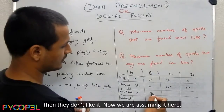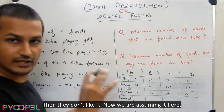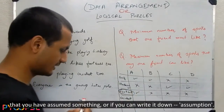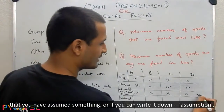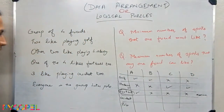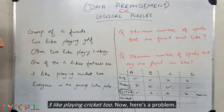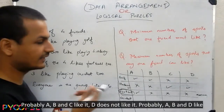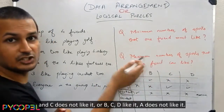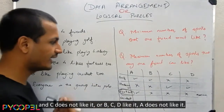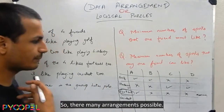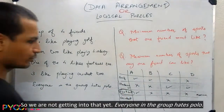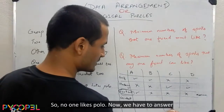So when we assume football is liked by A, remember to note it down as an assumption. Now three like playing cricket — this creates multiple possibilities: A, B and C like it and D does not; or A, B and D like it and C does not; or B, C and D like it and A does not. There are many arrangements possible, so we're not locking that in yet. Finally, everyone in the group hates Polo, so no one likes Polo.